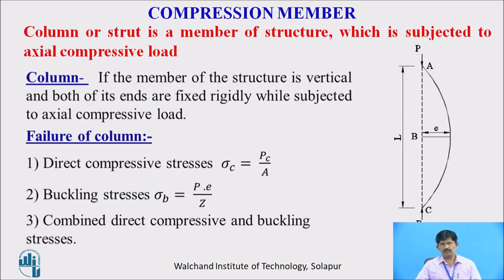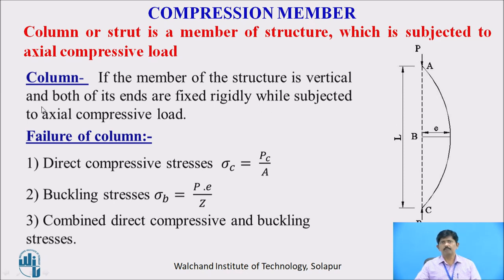The compression member may be called a column or a strut, which is subjected to axial compressive load. A column is a structure which is vertical and both its ends are fixed, subjected to axial compressive load.